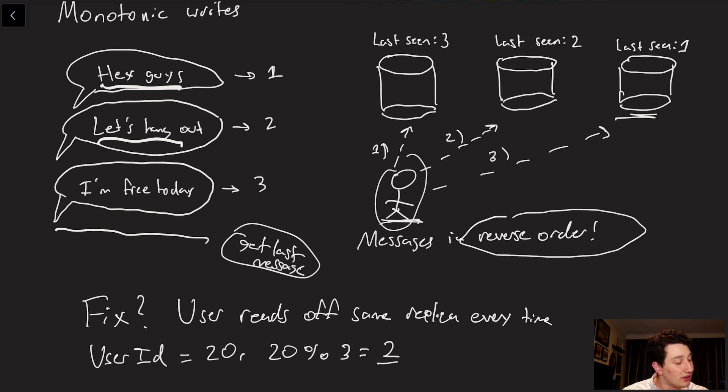So as you can see, I've written down the messages are coming in in reverse order. So what actually is our fix here? Well, in this case, one easy thing that we could do is actually have our user read off of the same exact replica every single time. So even though the data that you might be getting could be stale, it's certainly not going to be going back in time, because you're reading off the same thing. It's definitely going to be going forward in time, or as we might call this a monotonic read.